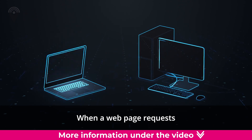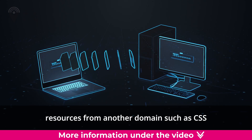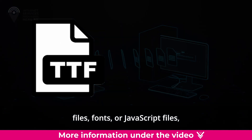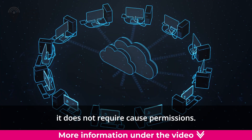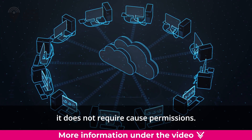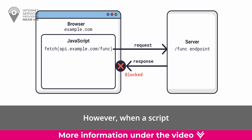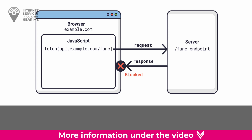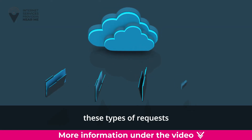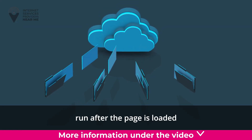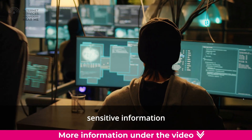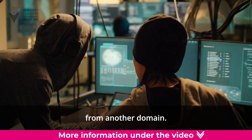When a web page requests resources from another domain, such as CSS files, fonts, or JavaScript files, it does not require CORS permissions. However, when a script or an iframe element tries to make a request, CORS is needed. This is because these types of requests run after the page is loaded, and they can potentially access sensitive information from another domain.